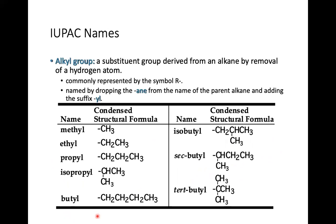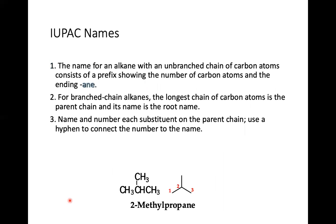Alkyl groups are the substituents that attach to the parent chain of a hydrocarbon, sometimes represented by the symbol R when undetermined. They are named by dropping '-ane' from the parent alkane and adding the suffix '-yl.' The alkyl groups include methyl, ethyl, propyl, isopropyl, and butyl. There are also sec-butyl and tert-butyl, depending on where the CH3 or carbon is attached — all contain four carbons.